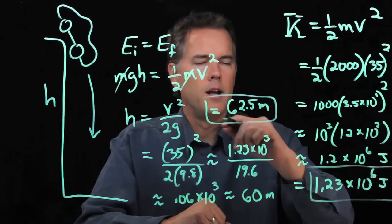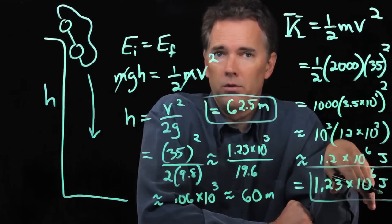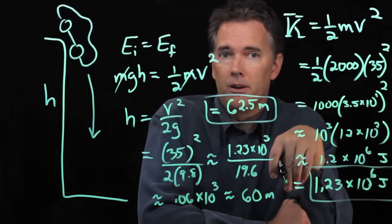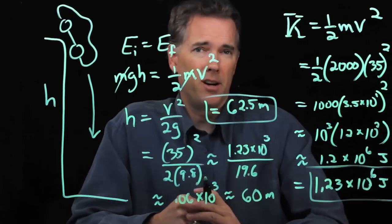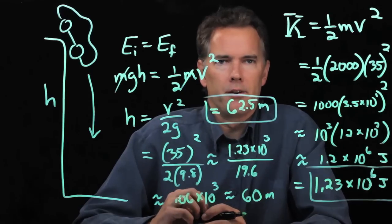To get an energy of 1.23 times 10 to the 6 joules, you drop your car from 60 meters and that would do it. But 60 meters, that's pretty high. That's 180 feet. So, a lot of energy in a moving vehicle.